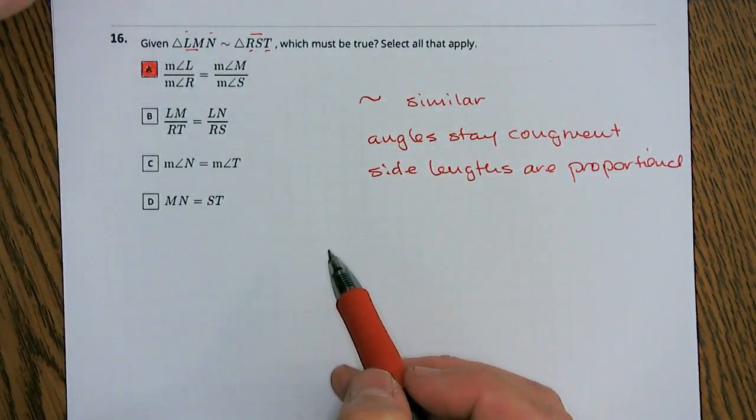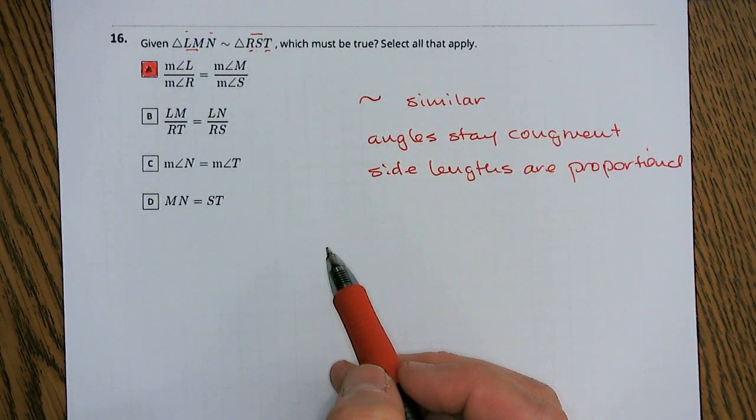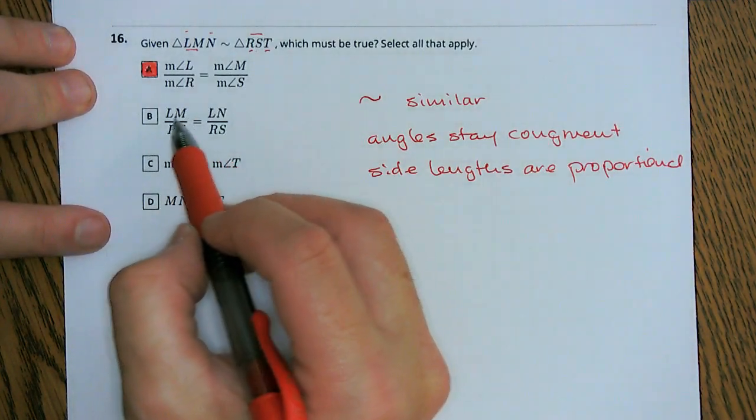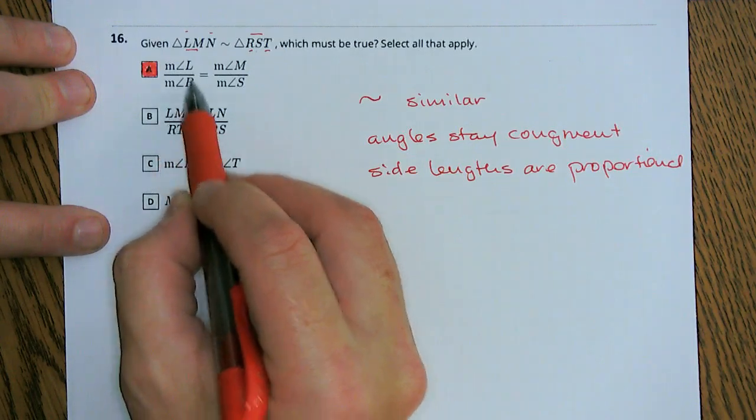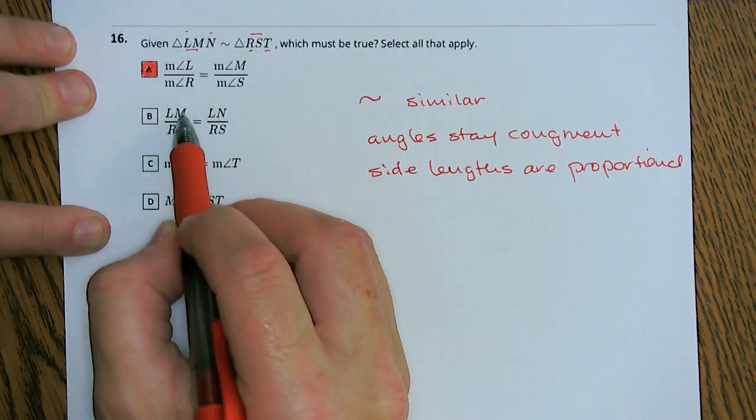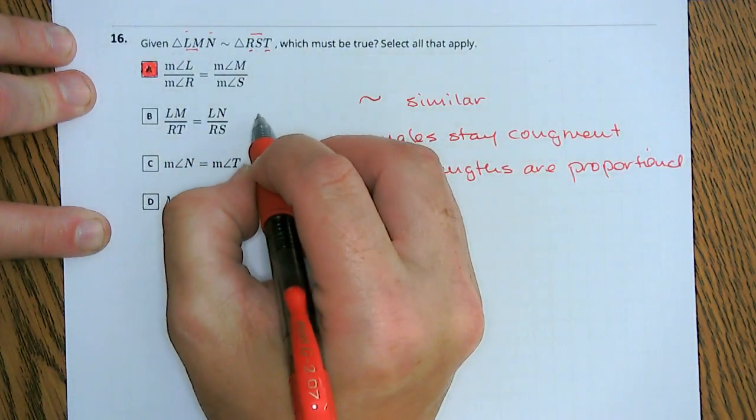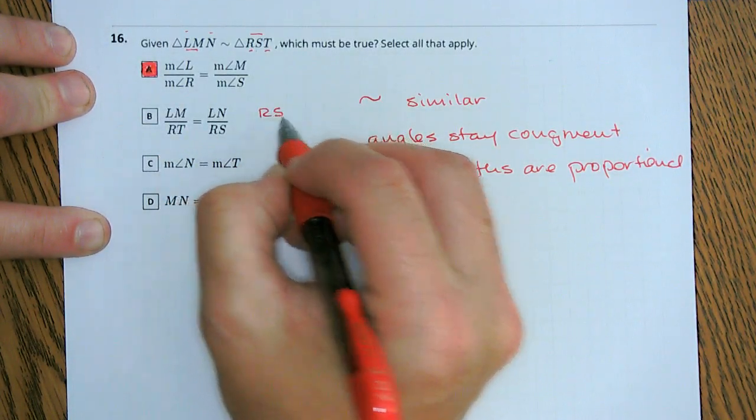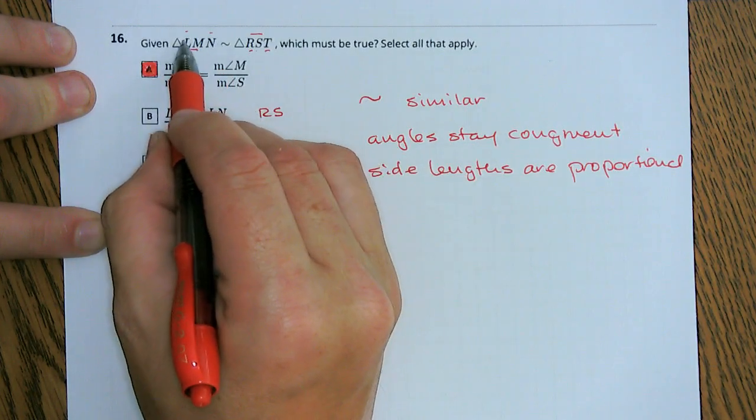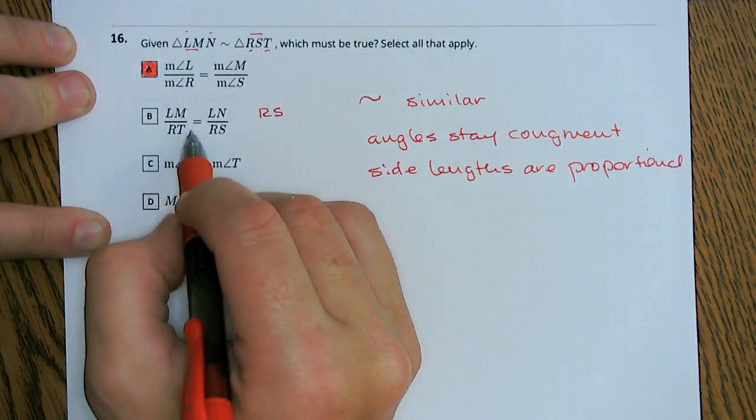Notice here you're not having the same sides being compared. What they should have done is said LM, first two letters, if you're comparing it to the first two letters of the other one, it should have been RS, LN, first two letters, RT.